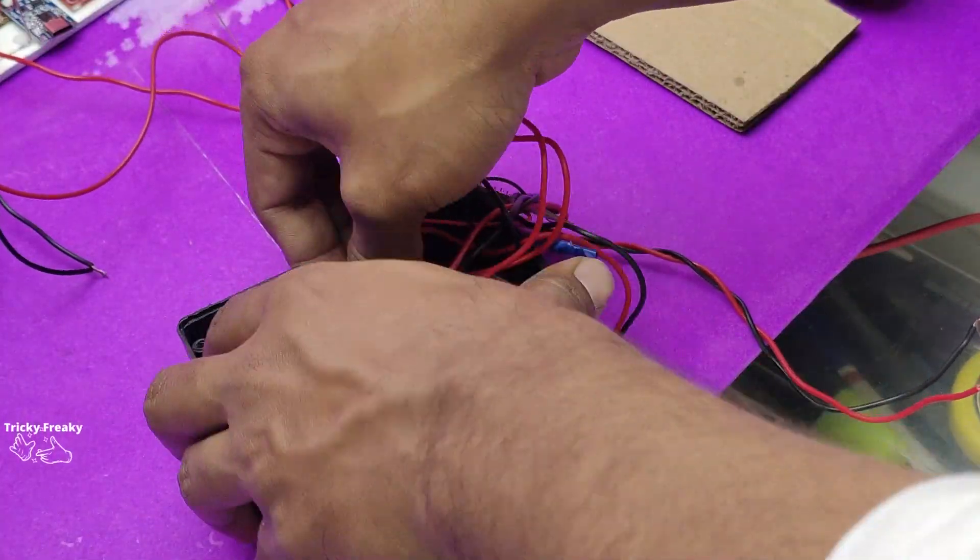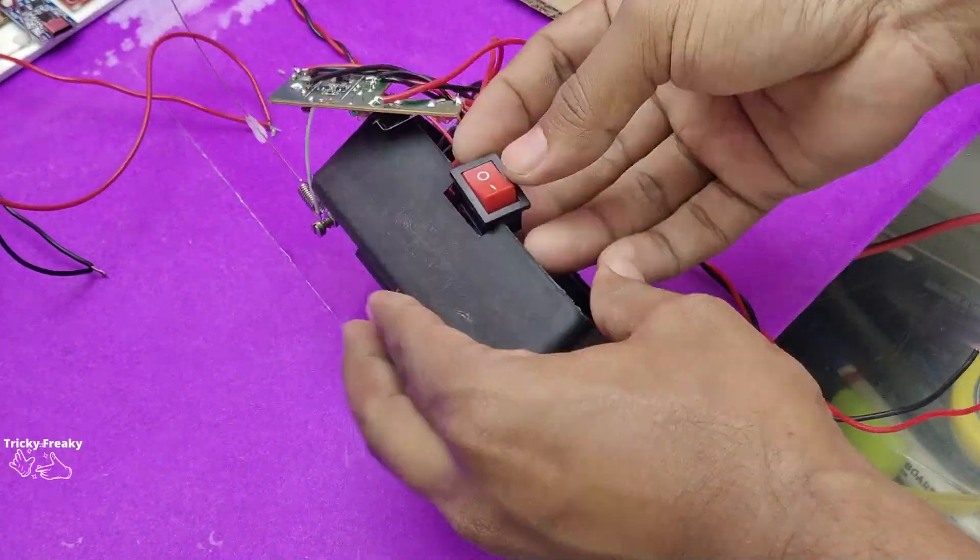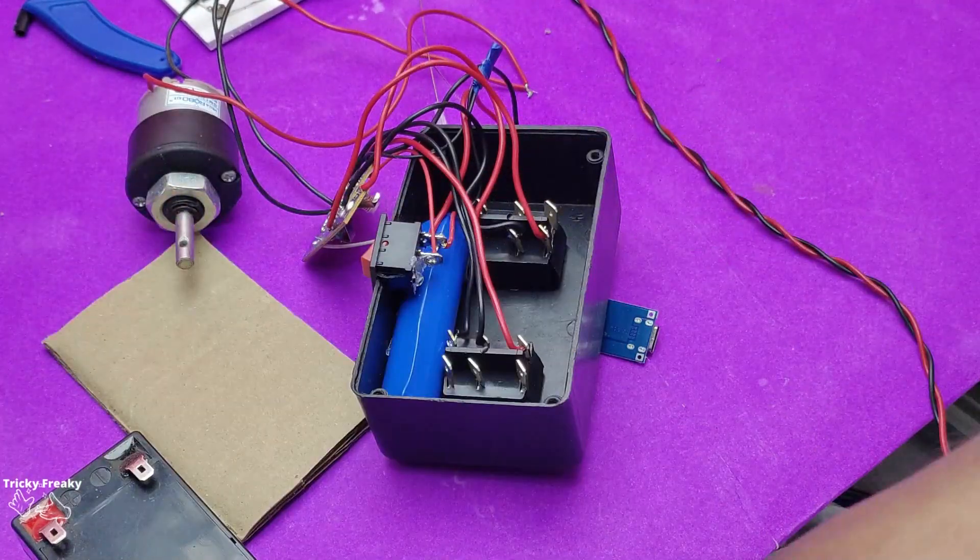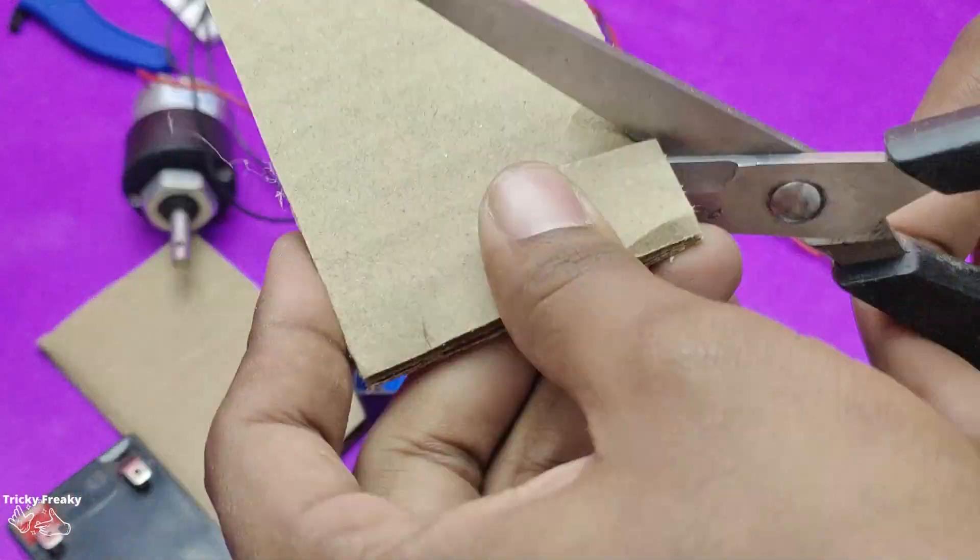Once your connections are proper, you need to secure your transmitter inside the transmitter box. It took me quite some effort and hours to do it, but you can speed up the process.